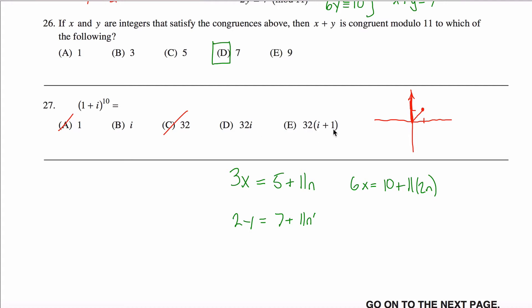32 times i plus 1 is 32i plus 32, so that would be on this ray here, which my answer is not. I already figured out that the sum of the angles, 10 times 45 degrees is 450 degrees, which is talking about going straight up here. So this can't be my answer either, so it's one of these two guys.